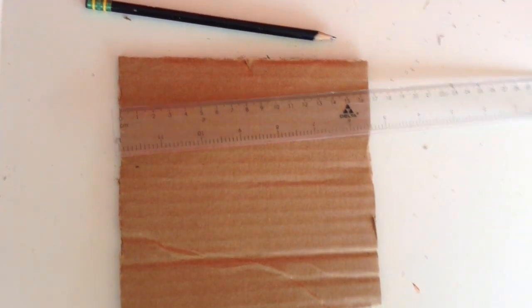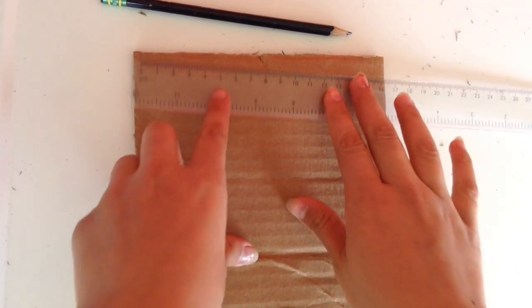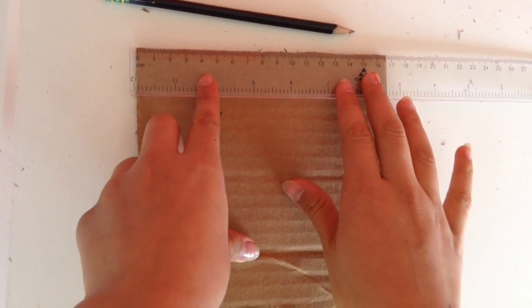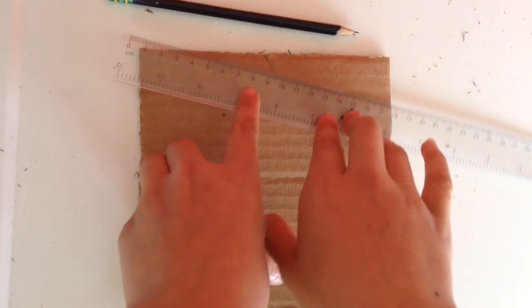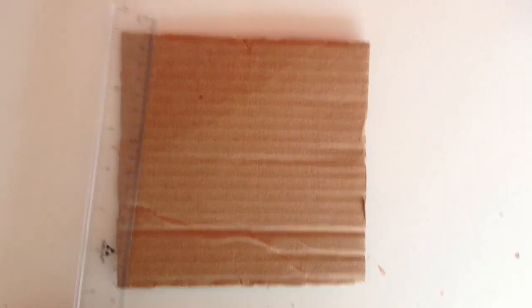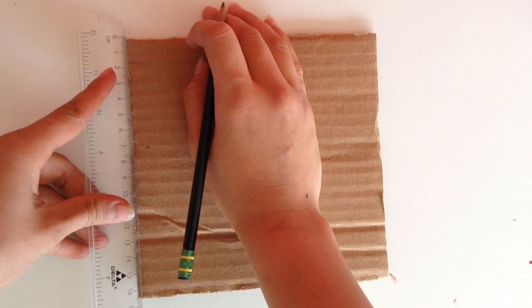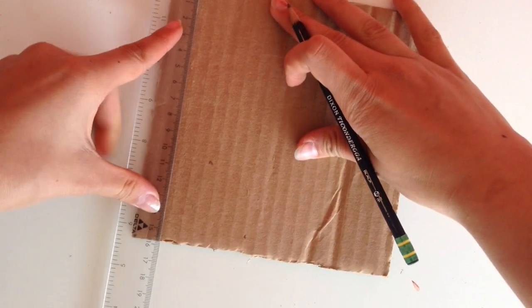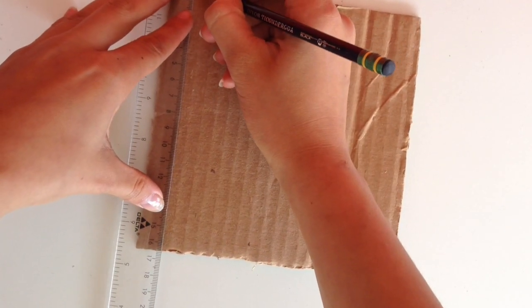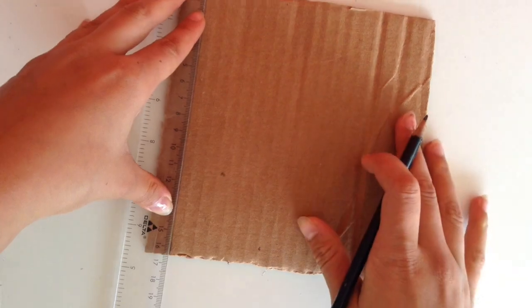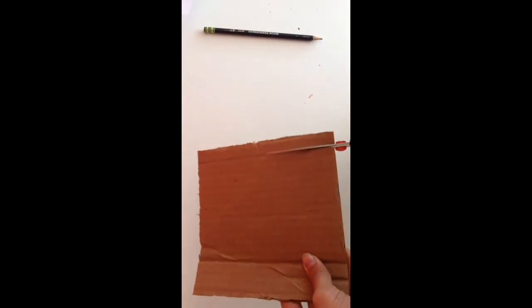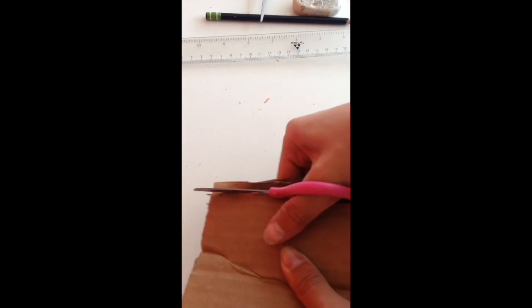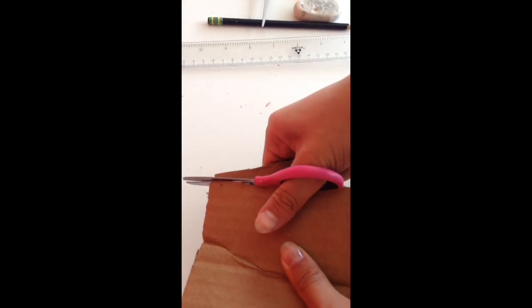Now we have two circles. Now you have to do a rectangle with a base of 16.5 centimeters and with a height of 1.5 centimeters like this. And repeat this process three more times.